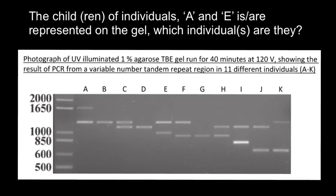Hello and welcome to Nikolai's genetics lessons. Today's video is going to be about how to understand gel electrophoresis results. Here is a problem: the child or children of individuals A and E is represented on the gel — which individuals are they?